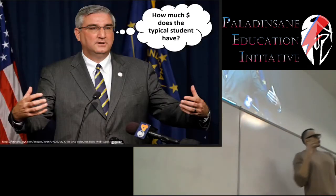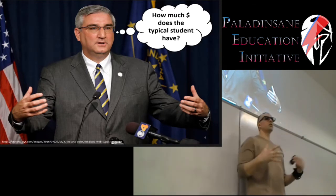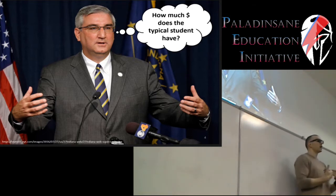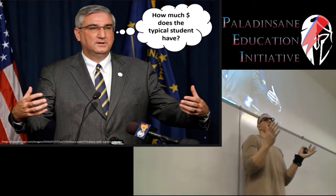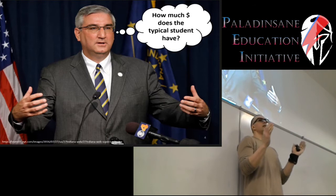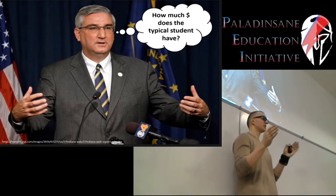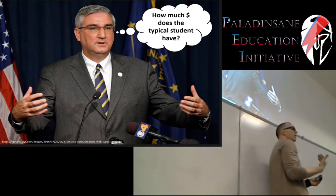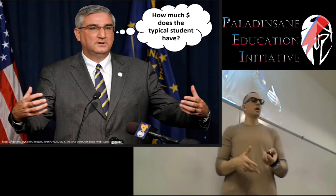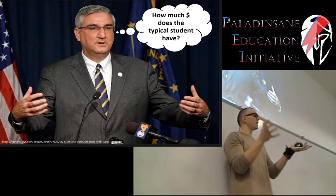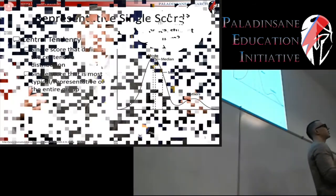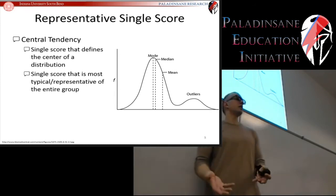The idea of central tendency: whenever you have a huge amount of data, it is difficult for our human minds to wrap around that. There's a very famous study in cognitive psychology that says your working memory has a capacity of about seven units of information plus or minus two — that's why phone numbers are seven digits long. When we're thinking about hundreds of thousands of data points, there's no way our minds can make sense of that unless we can boil it down to a single number representative of the entire distribution.